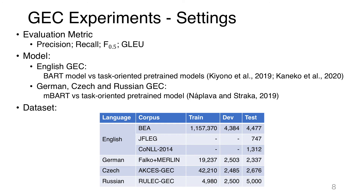We conduct GEC experiments in several languages to investigate the effectiveness of generic pre-trained models. For English GEC, we compare fine-tuned BART results with previous work that uses task-oriented pre-trained models. For German, Czech, and Russian GEC, we compare fine-tuned multilingual BART results with previous work, which also uses task-oriented pre-trained models.